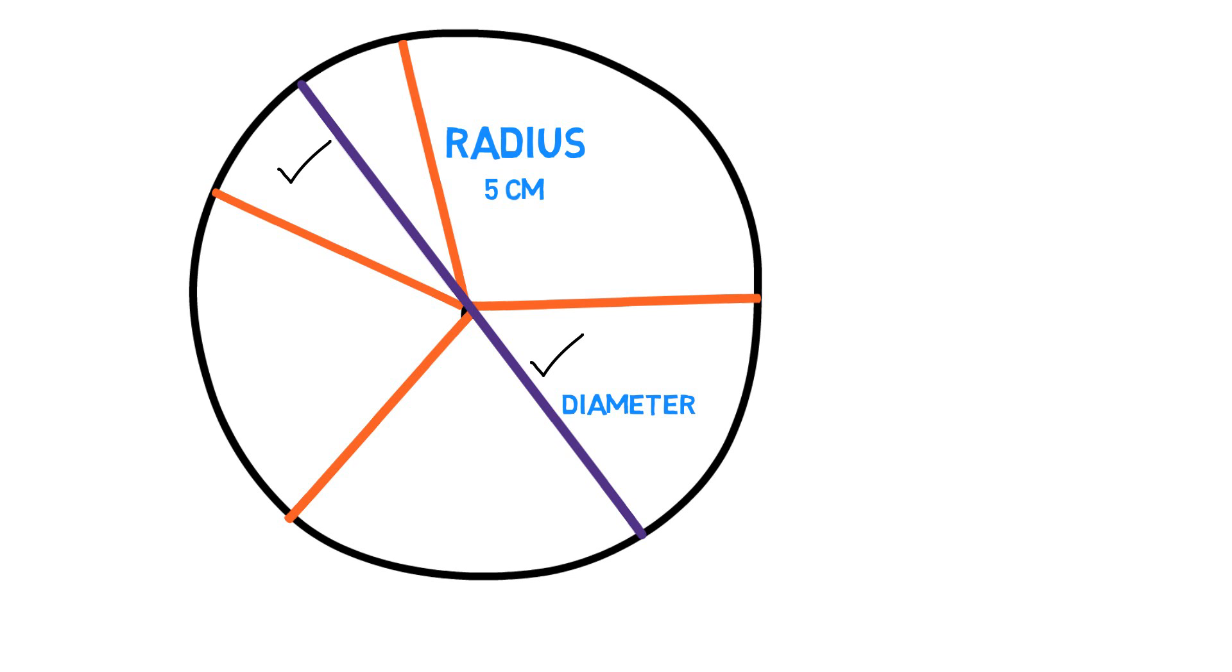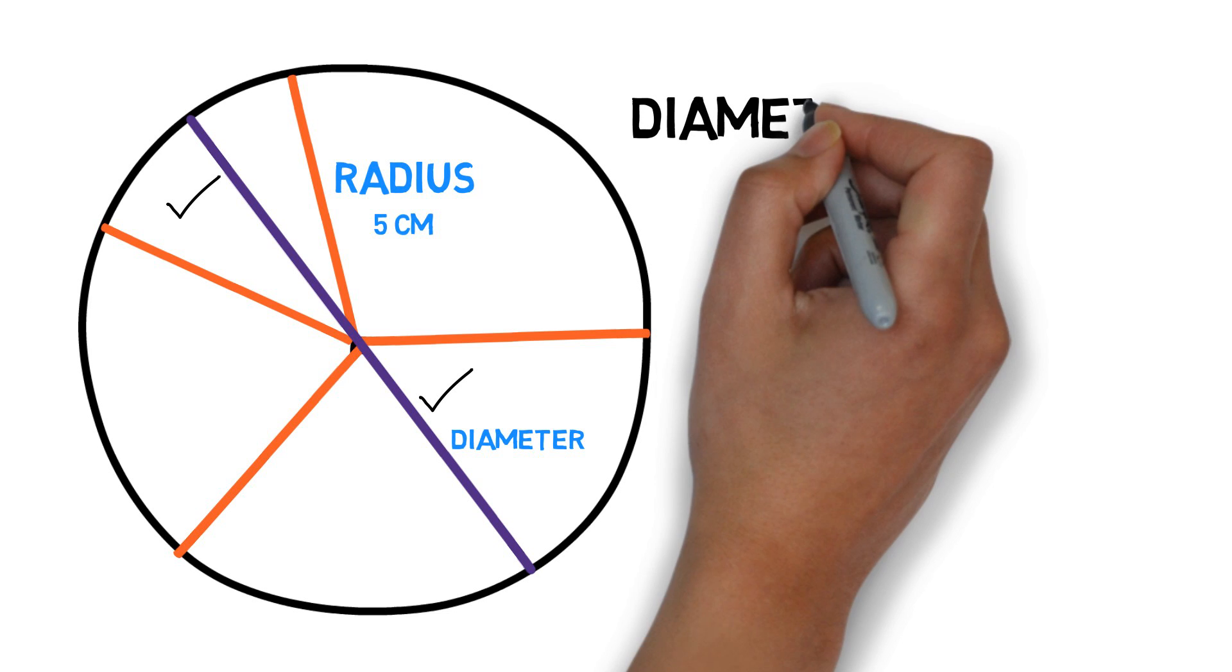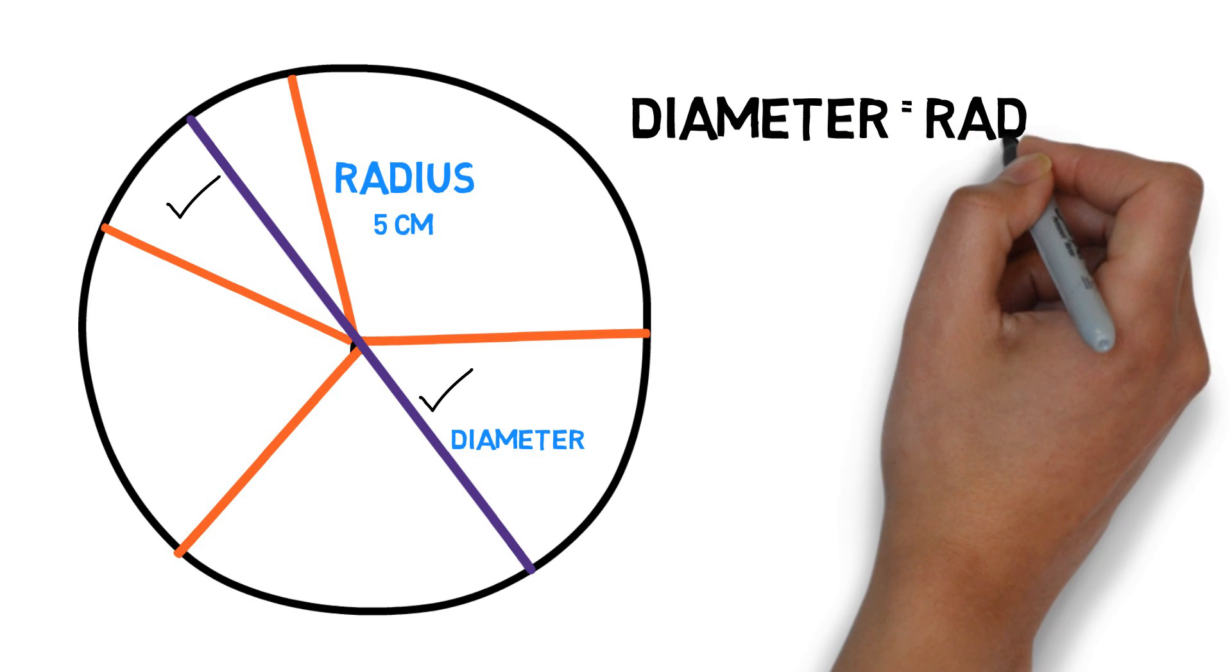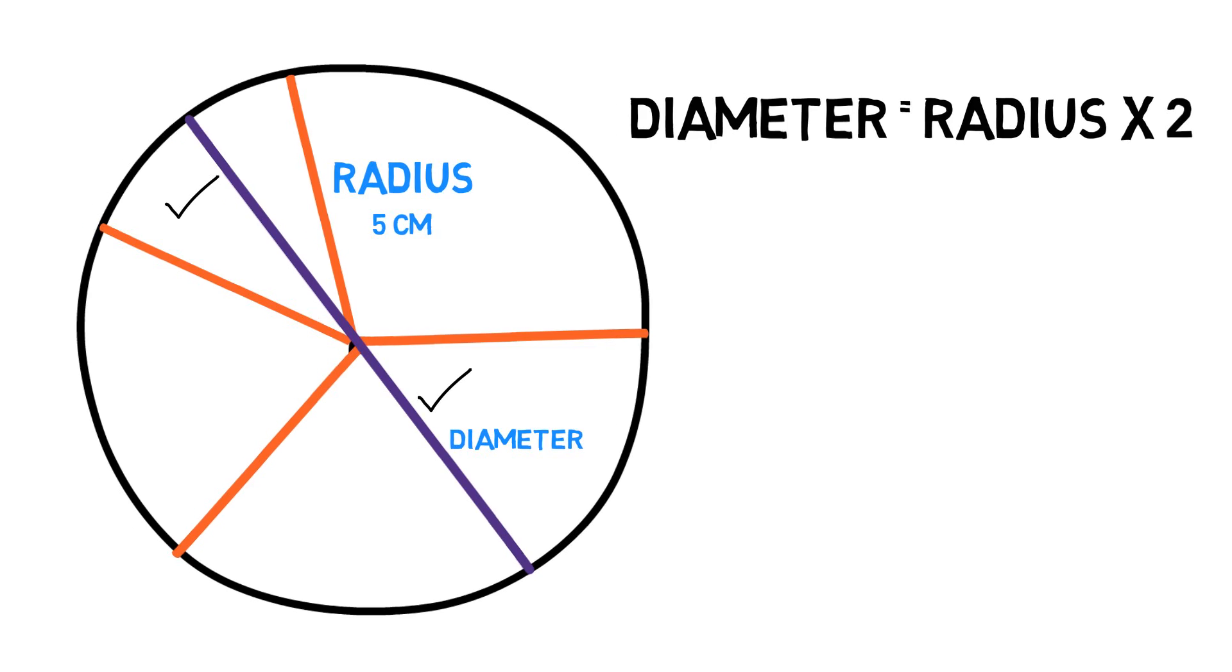Now pause the video and make sure you understand the difference between the radius and the diameter. Let me write this down. The diameter is equal to twice the length of the radius. Now let's look at another concept.